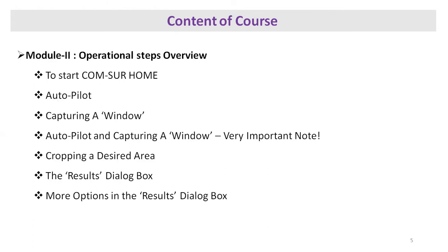Module two is the operational steps overview. The points include how to start Compser home, then autopilot and capturing a window. You can put it on autopilot and have the option to capture windows at different intervals, then cropping a desired area — you can crop suspicious things from the footage. It also provides a result table, a dialog box where you can view and audit results, check for suspicious activity, and explore more options available in the results dialog box.